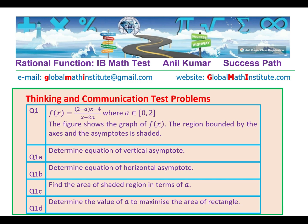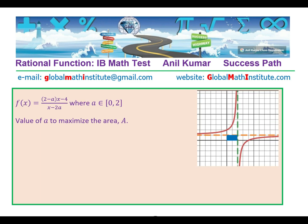So once we are given this particular equation, we determined the equation of vertical asymptote, and we also found the equation of horizontal asymptote. So once we got those, we got the area, and we maximize the area using the concept of quadratic equations. So that is how we maximize this particular area for a.